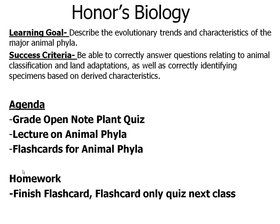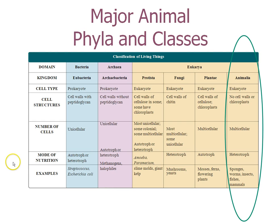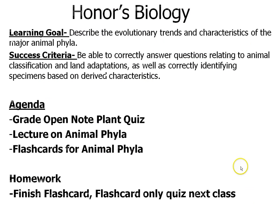Today we're going to learn about all the different major phyla of animals on this planet. Remember that Kingdom Animalia has eukaryotic cells, no cell wall, is all multicellular, heterotroph, and moves at some point in its life. We're going to get a lecture on some of the information you need to know about the different animal phyla and their characteristics.